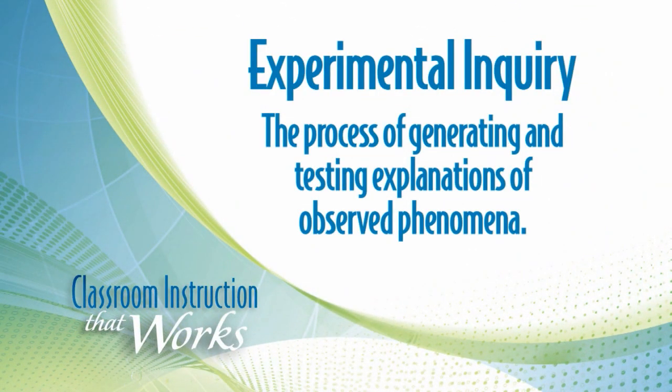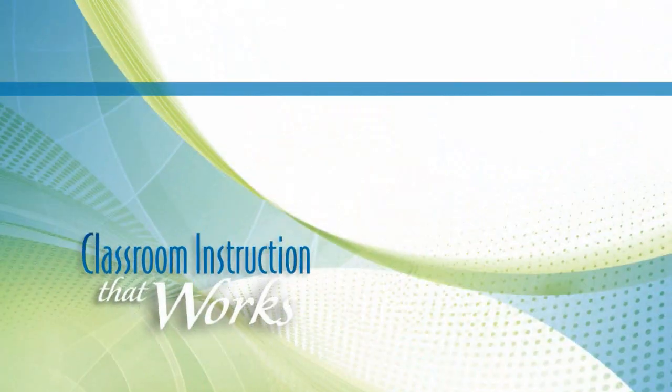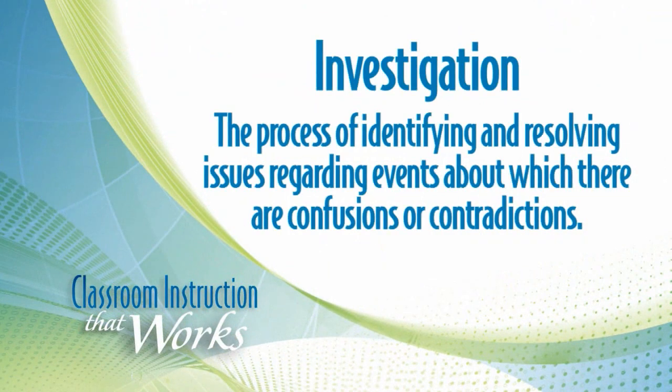The third is what we usually think of in a science classroom: an experimental inquiry. This is where students notice a phenomenon, come up with various hypotheses for what's causing it, and then run tests to see which of their hypotheses might be correct.